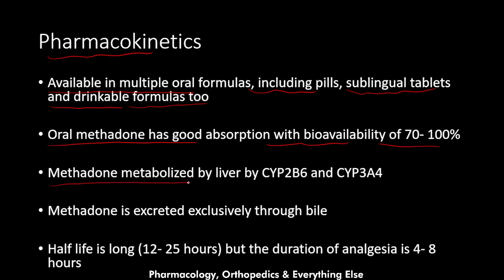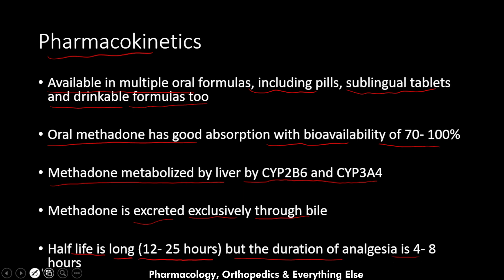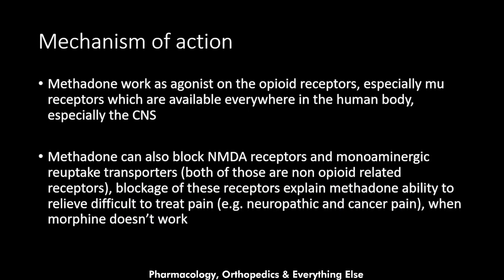Methadone is metabolized by the liver via CYP2B6 and CYP3A4, and it is excreted exclusively through the bile. It has a long half-life of 12 to 25 hours, but the duration of analgesia is 4 to 8 hours. Now let's talk about the mechanism of action of methadone.